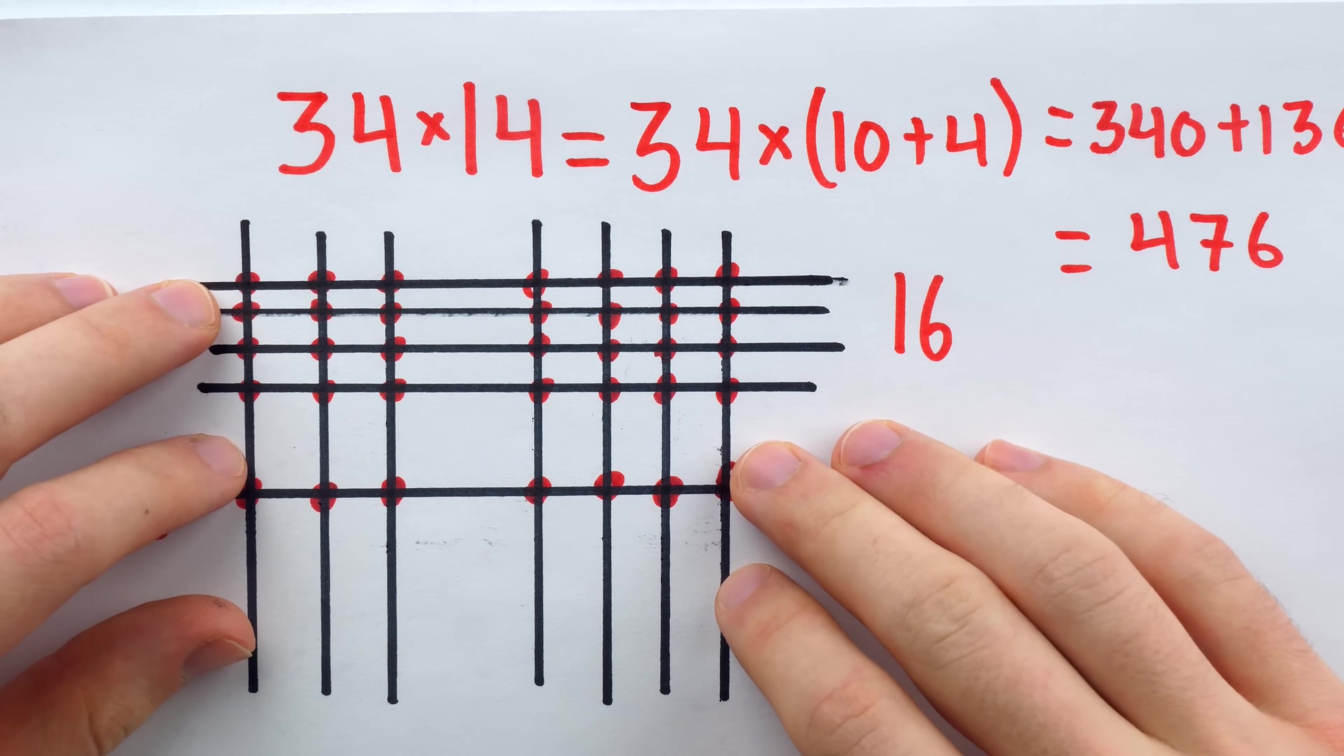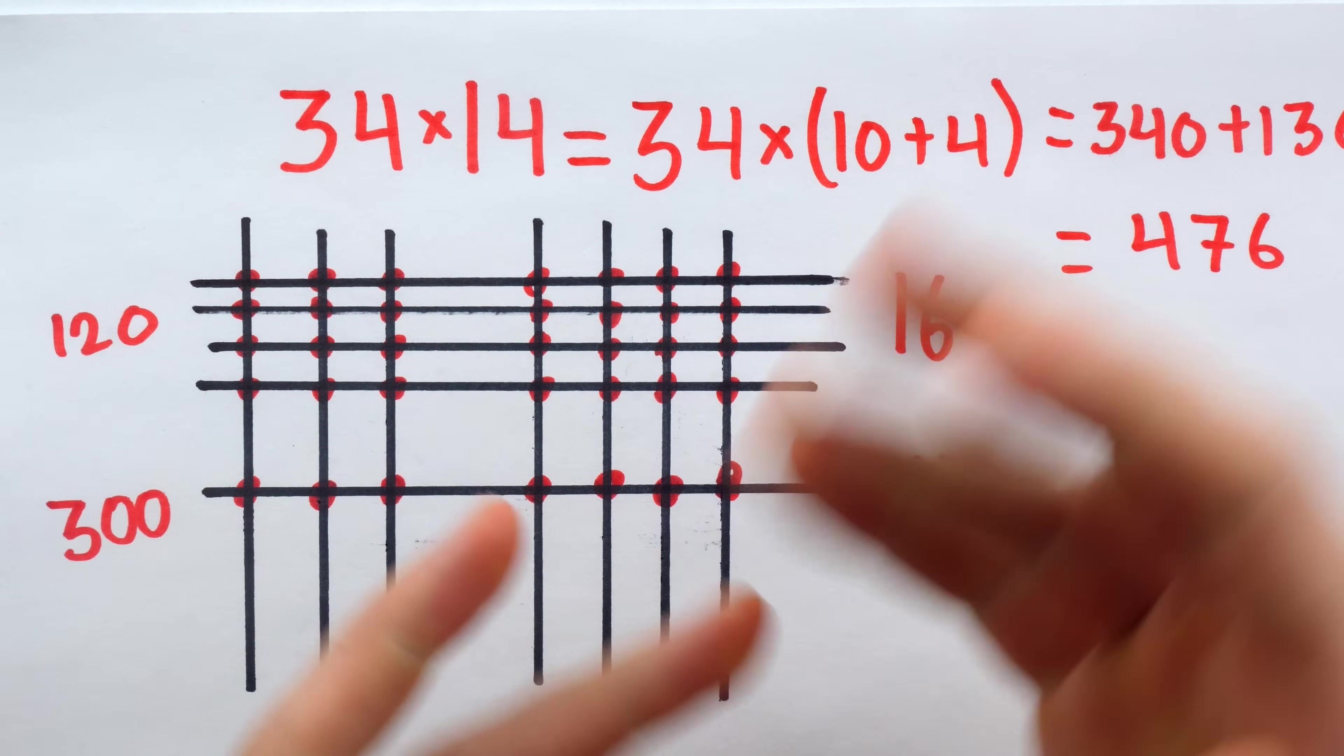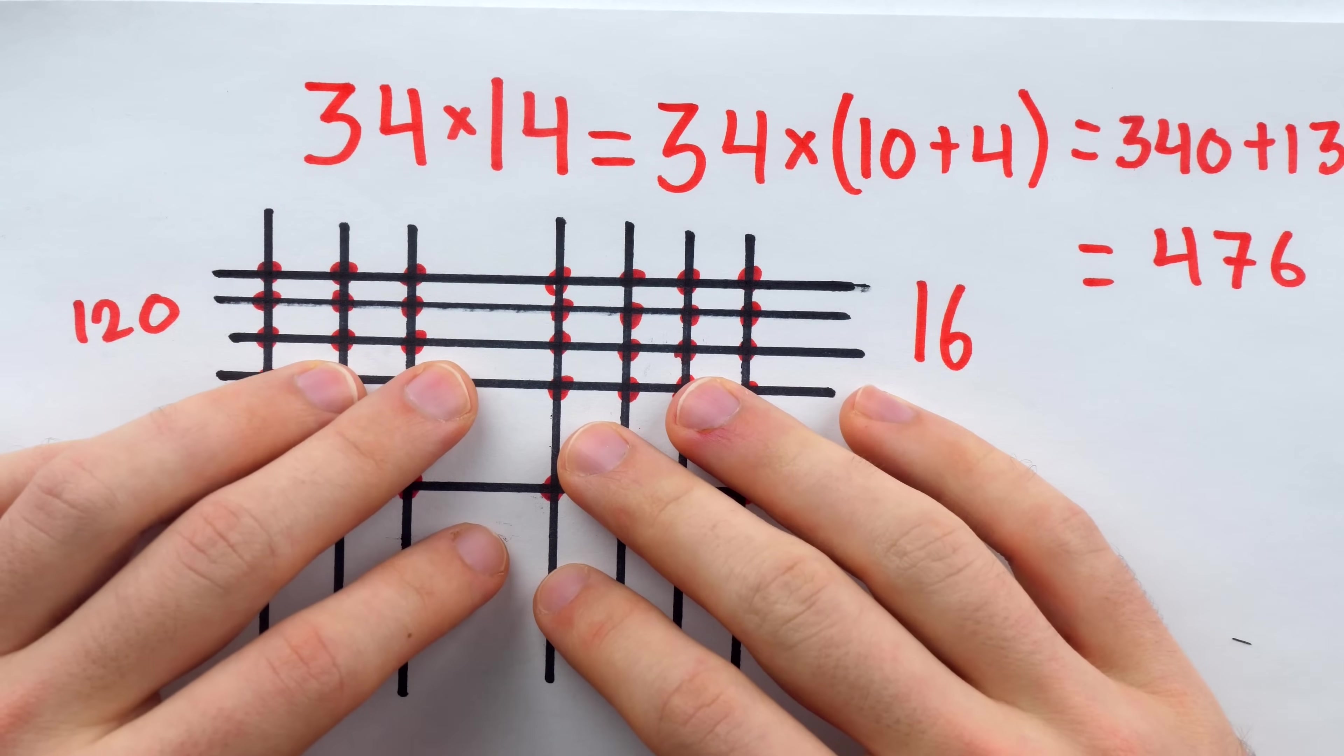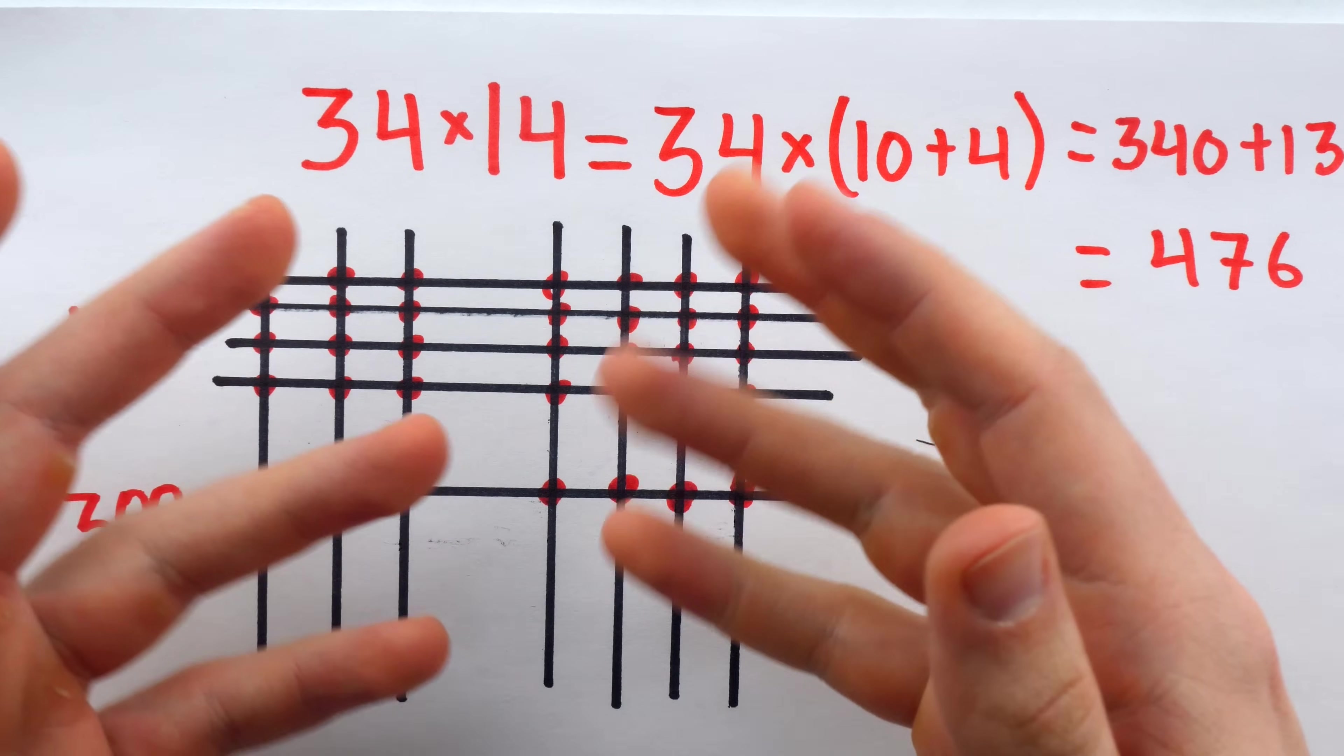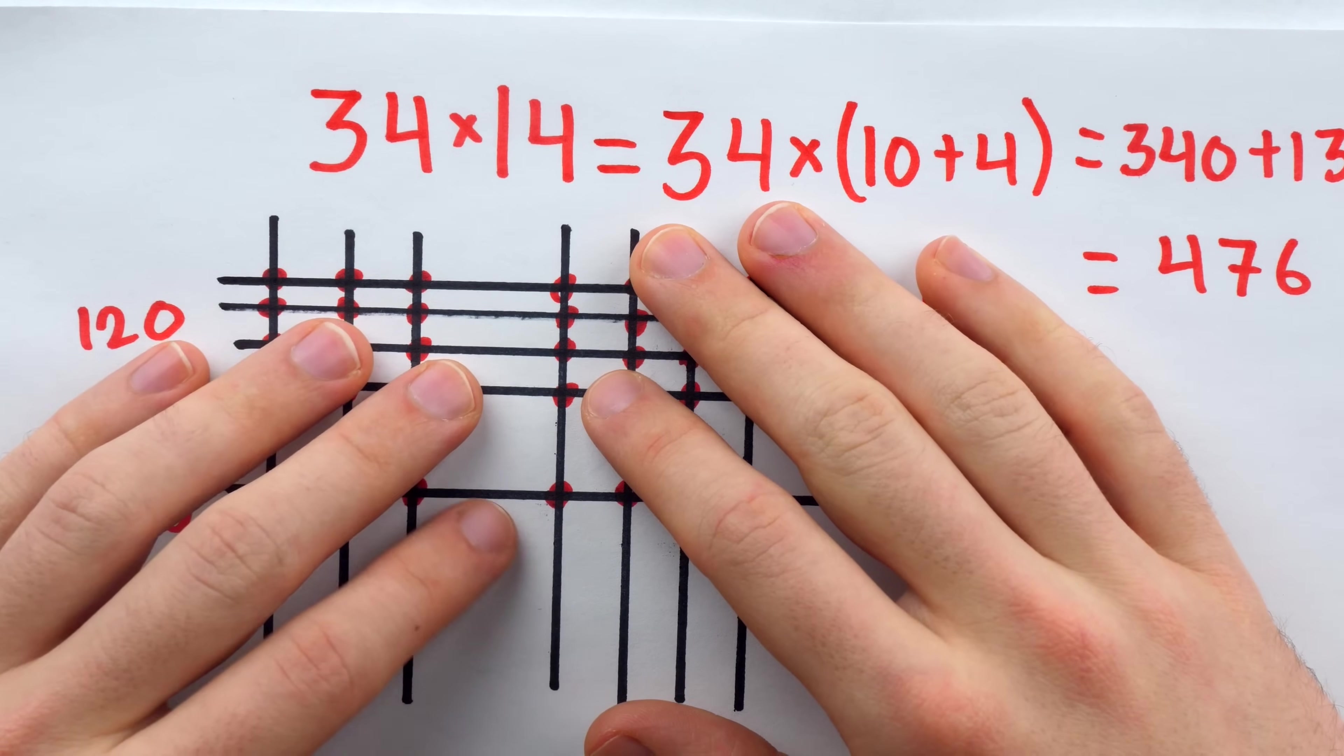But back to its name, I wasn't able to find any common name for it. It seems like it could be called the lattice method, but there's already a method of multiplication called the lattice method, link in the description to my video about it, and it's not this. This method also bears a great resemblance to the method of multiplying on a chessboard with slightly dirty pennies. You can watch my video on that in the description as well.